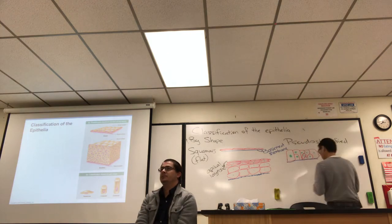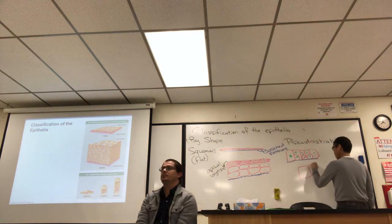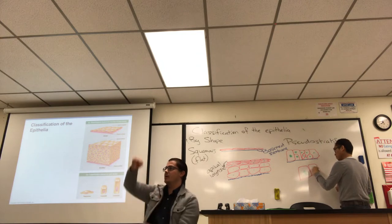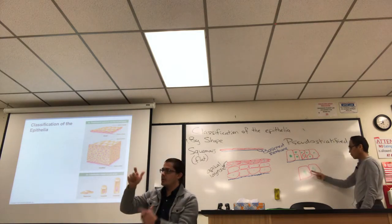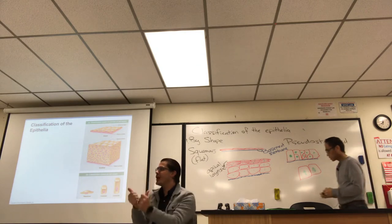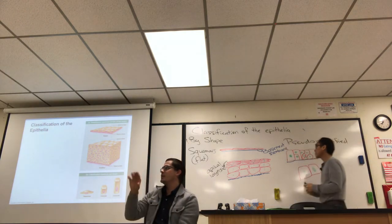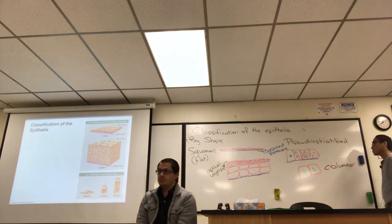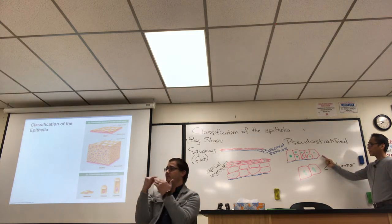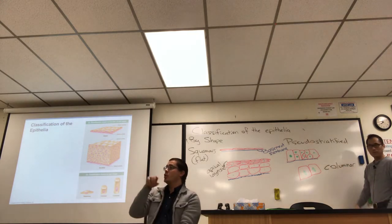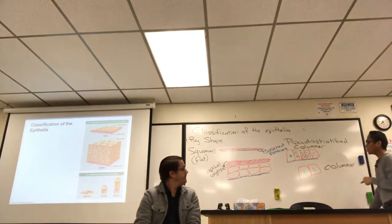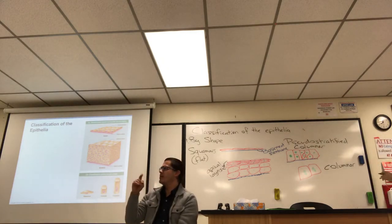Cells can also be shaped like columns with large oval cigar-shaped nuclei — these are called columnar-shaped cells. Pseudostratified columnar epithelium is a common example of that shape, and you will frequently encounter pseudostratified columnar in the structures we study.